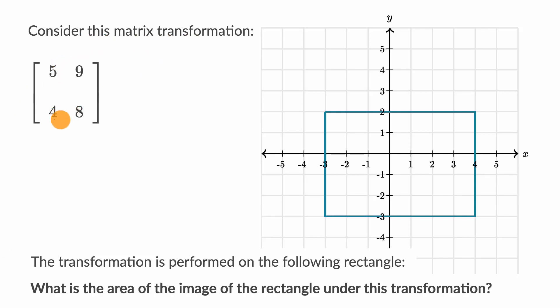We're told to consider this matrix transformation. This is a matrix that represents a transformation on the entire coordinate plane. And then they tell us that the transformation is performed on the following rectangle. So this is the rectangle before the transformation.